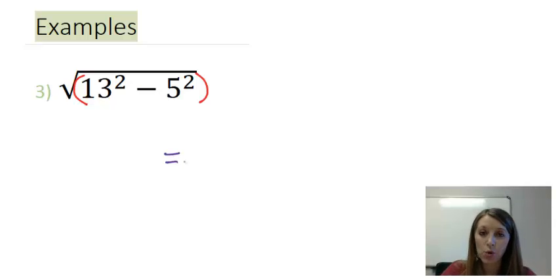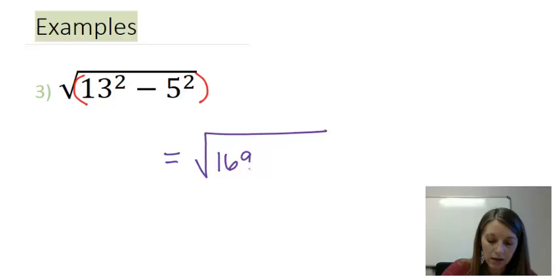So I have square or exponents, and since they're isolated from each other, I can work them both independently. 13 squared or 13 times 13 gives me 169 minus 5 squared or 5 times 5 gives me 25.